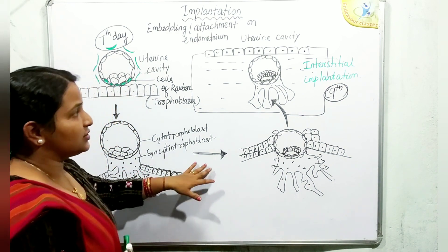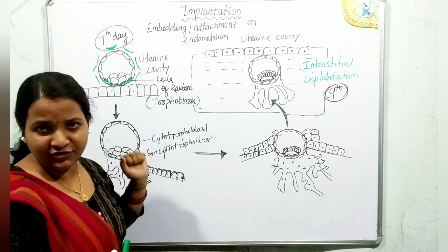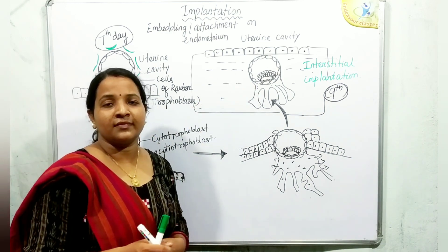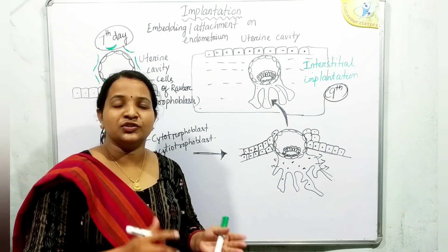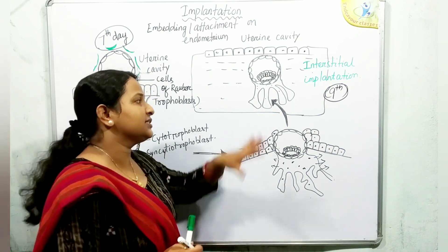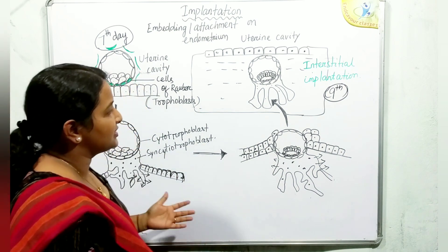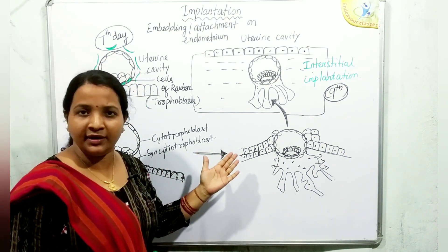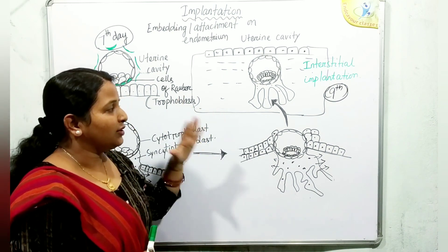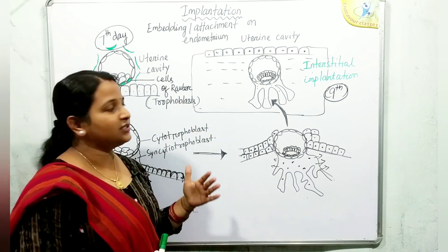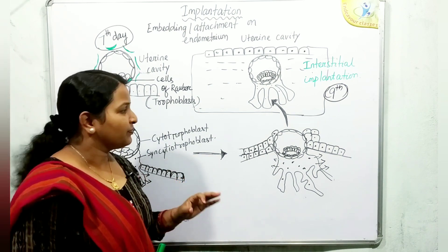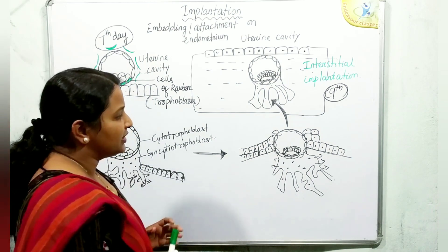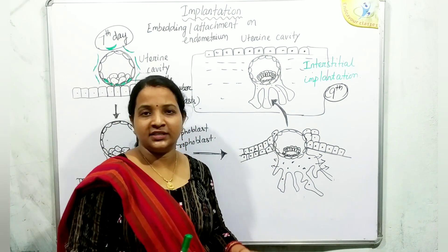Implantation results in pregnancy — this is the beginning of pregnancy, or we can say conception has occurred. The female is now considered pregnant. A missed menstrual cycle is typically the first sign that implantation has occurred.